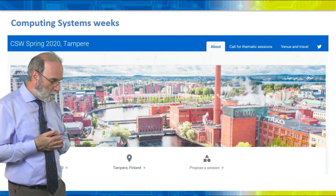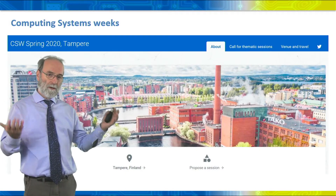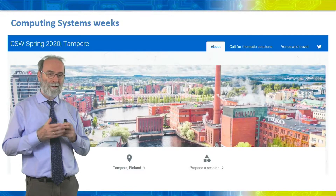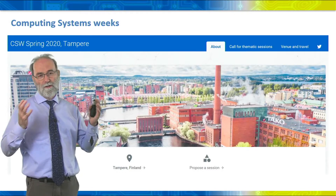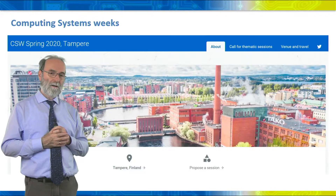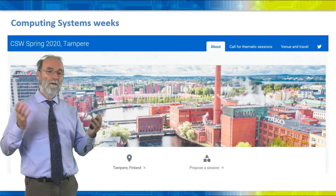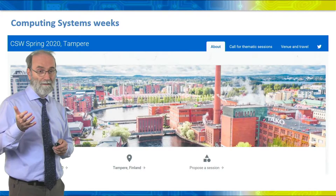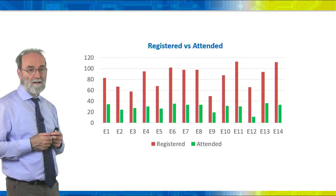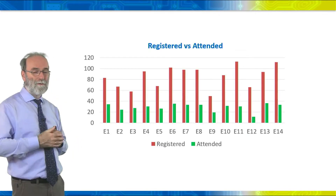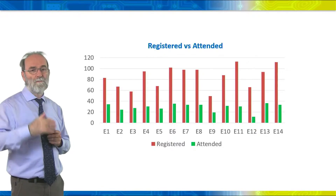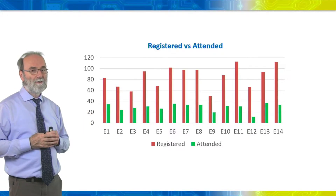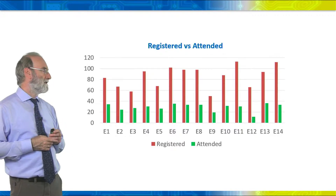We also have networking events — one in spring and one in autumn. These are bottom-up events where members can organize thematic sessions on a particular topic; we provide the space, catering, and everything. It's called a week but it's more like two to three days, completely packed with workshops, tutorials, and keynotes. We recently had to do this virtually. The red bars show the number of people registering per event — 14 events in a computing systems week — but attendance is much lower, around one-third. Nothing matches a real physical event: that's something we learned from COVID.